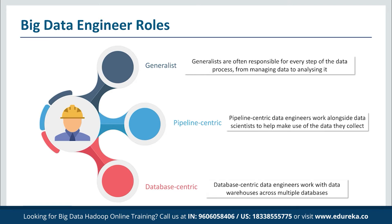There are typically three kinds of roles that a big data engineer has to assume. First, we have the generalist, typically found on small teams or in small companies, where data engineers wear many hats and are responsible for each step of the data process. Next, we have pipeline-centric data engineers, often found in mid-size companies, who work alongside data scientists and need in-depth knowledge of distributed systems and computer science. Finally, we have the database-centric profile, found in larger organizations, where engineers focus on analytics databases and are responsible for developing table schemas.